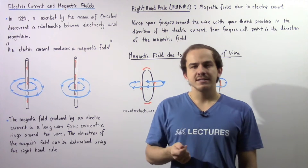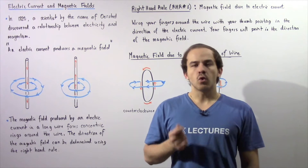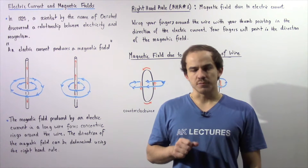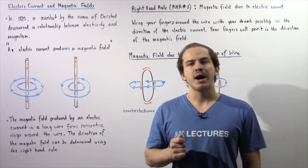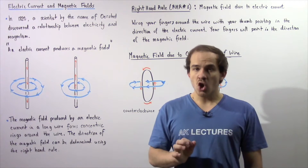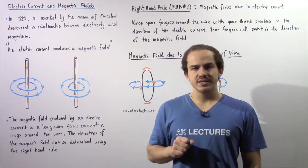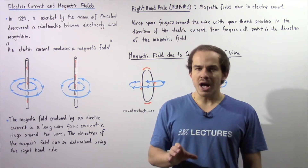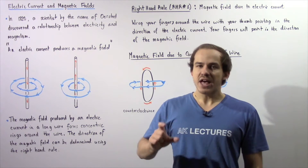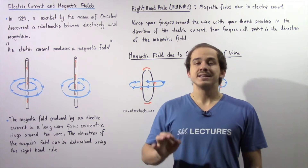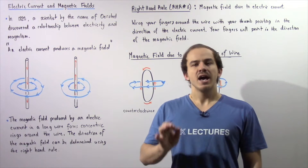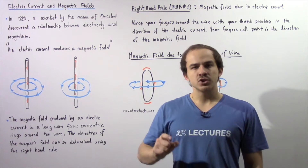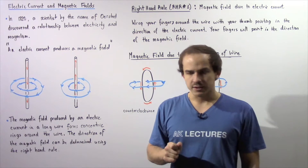For a very long time, the concept of magnetism and electricity were believed to be separate concepts which were in no way connected with one another. However, in the year 1820, a scientist by the name of Ørsted was able to show a relationship between electricity and magnetism. He essentially took the needle of a compass and placed it next to a wire which had a current, and that needle pointed itself in the direction of the magnetic field produced by the electric current inside that wire. So he was able to show that the electric current within a wire produces a magnetic field.